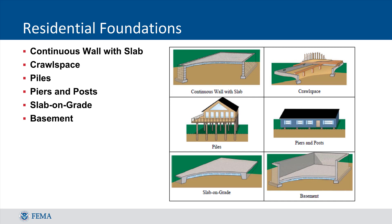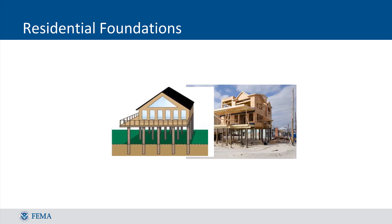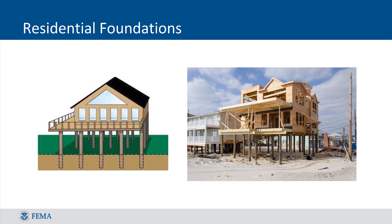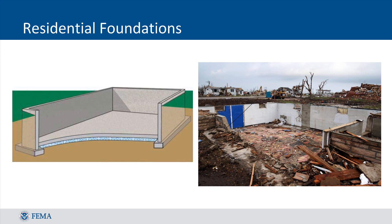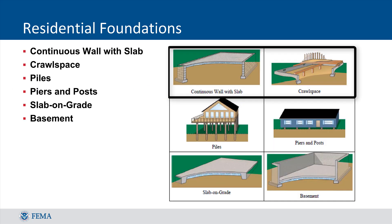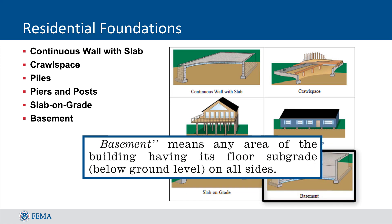The most common type of foundation will vary regionally. A couple of important distinctions arise when evaluating foundation types. Although the piles foundation type can often appear similar to piers and posts, it is distinct in that it is generally only found in coastal areas where the supports are driven into the ground and embedded several feet below grade. A basement foundation type is one where all sides of the foundation are enclosed and the foundation is wholly below grade. This is distinct from a crawlspace or continuous wall with slab because neither of these foundation types are below grade. This definition of a basement is much broader than that used by the NFIP, in which a basement refers to any area whose floor is below grade on all sides.